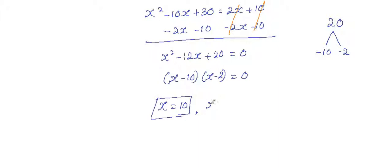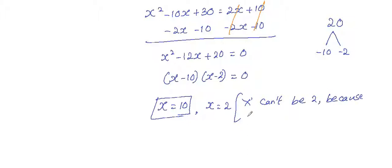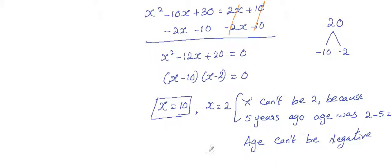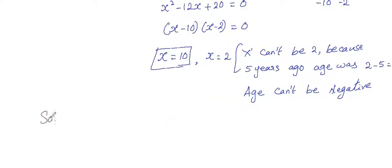So the values of x are 10 and 2. Both are positive, but we can't take x equals 2 because if we find the son's age 5 years ago it becomes 2 minus 5, which is minus 3 — a negative age, which is not valid. So we must take x equals 10 as the son's present age.